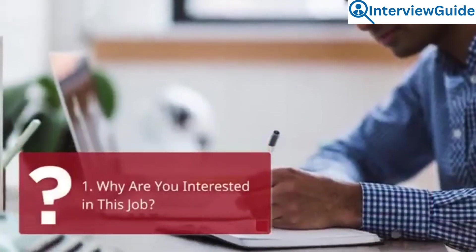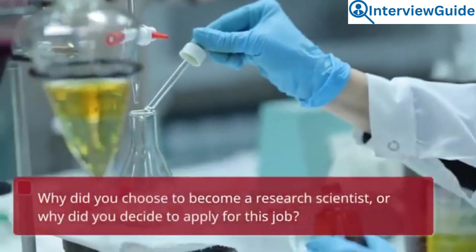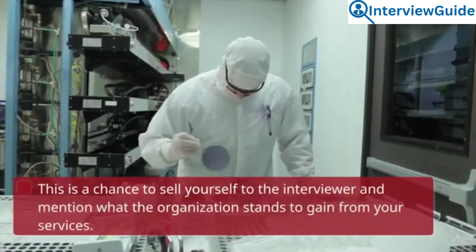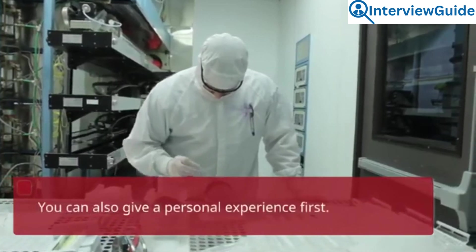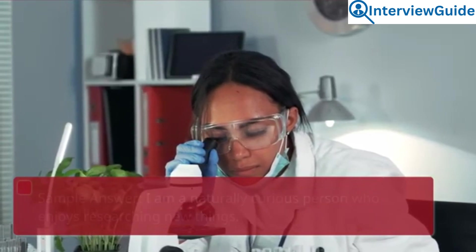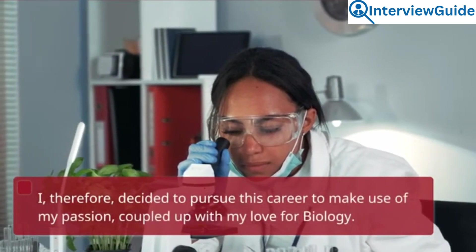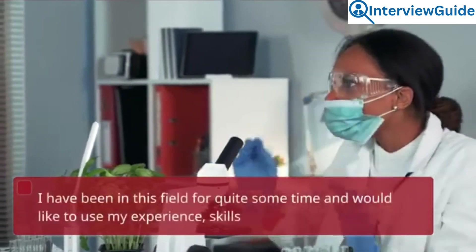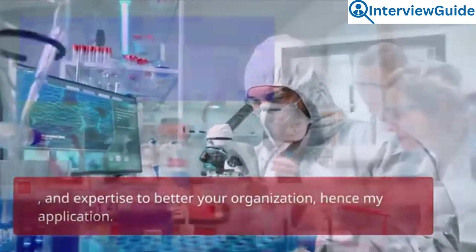Question 1: Why are you interested in this job? Why did you choose to become a research scientist, or why did you decide to apply for this job? This is a chance to sell yourself to the interviewer and mention what the organization stands to gain from your services. You can also give a personal experience first. Sample answer: I am a naturally curious person who enjoys researching new things. I therefore decided to pursue this career to make use of my passion, coupled with my love for biology. I have been in this field for quite some time and would like to use my experience, skills, and expertise to better your organization, hence my application.